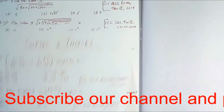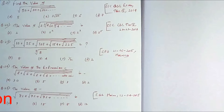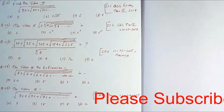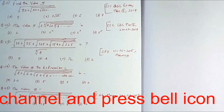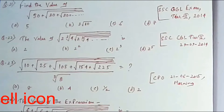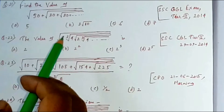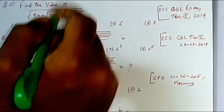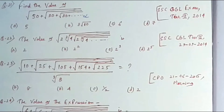We will now continue with the surds and indices previous year question paper solving session. Please subscribe to our channel so you can prepare for any government job exams. Question number 21: find the value of √(30+√(30+√(30+...))) going to infinity. Option A is 5, option B is 3√10, option C is 6, and option D is 7. This question came in SSC CGL 2014.